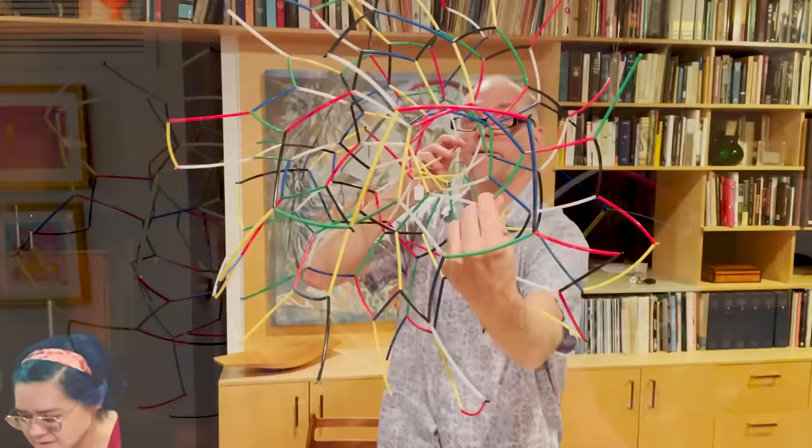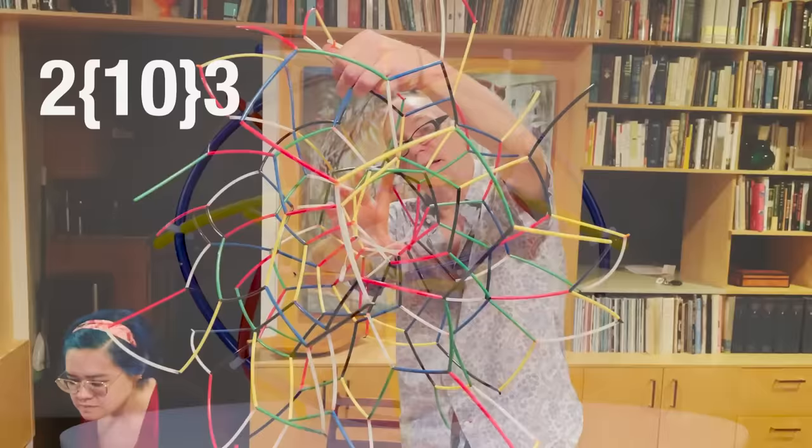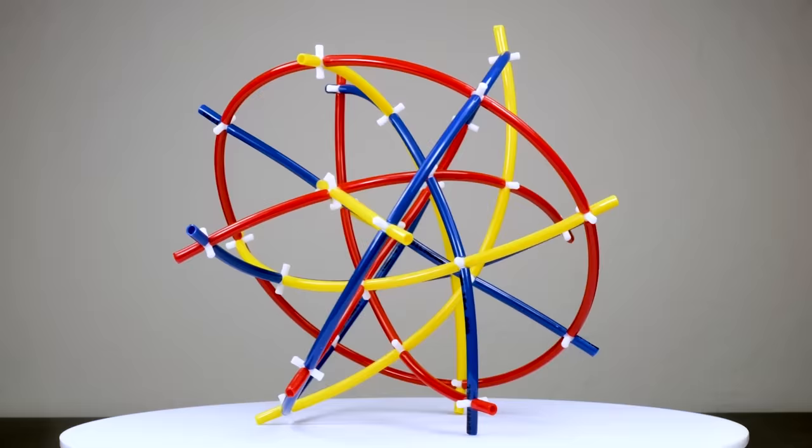Nan Ma pointed out to me that the graph is a two-fold quotient of the regular complex polygon 2-10-3, and the graph for the octahedral holonomy maze turns out to be a two-fold quotient of the regular complex polygon 2-6-4.